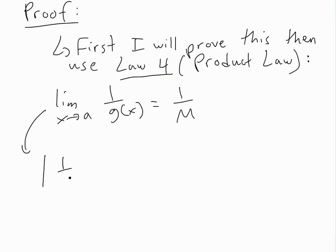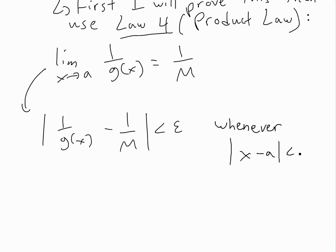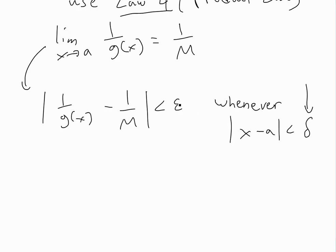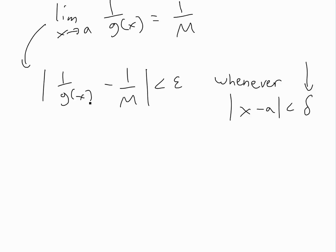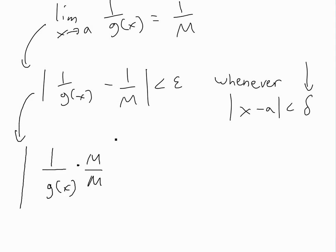We need to show that the absolute value of 1 over g(x) minus 1 over M is less than epsilon, whenever the absolute value of x minus a is less than delta. Just as in the earlier videos proving the product and sum laws, we need to find this delta. Remember, epsilon is given and can be any number greater than zero. To help find delta, we'll rearrange this absolute value expression.